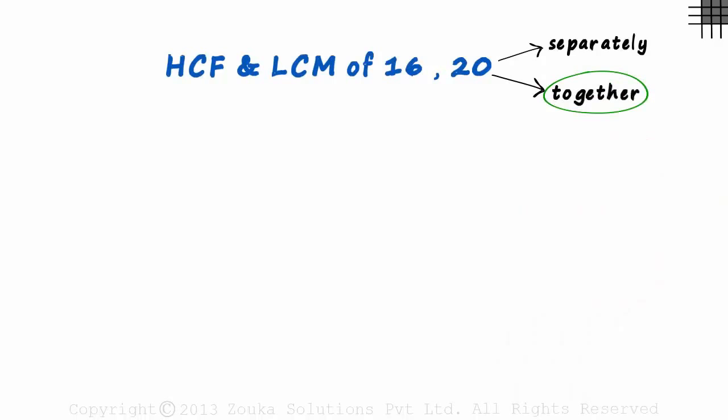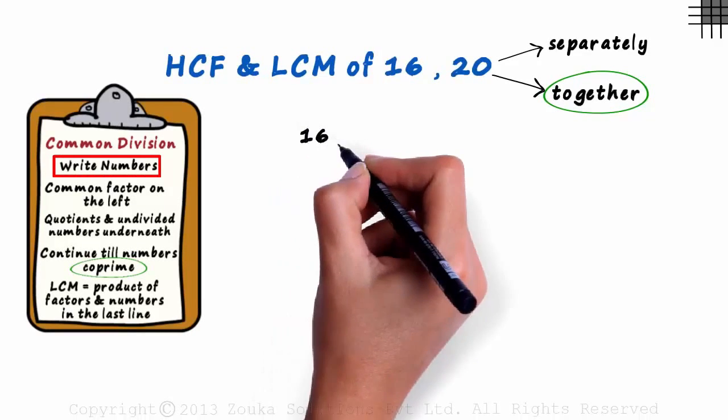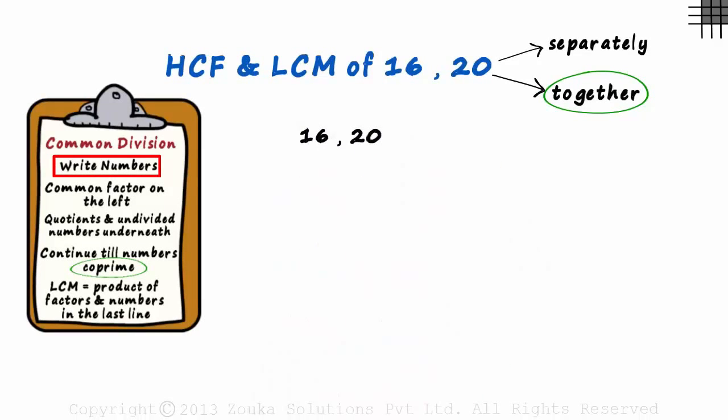All we need to do is use the common division method of finding the LCM. In the first step we write the numbers separated by a comma, and then draw an L shaped line like this.